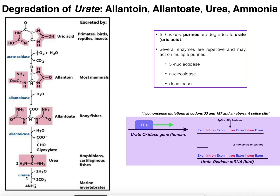Some organisms do express the enzyme urease. Urease breaks apart urea using two molecules of water — it's a hydrolytic enzyme — producing four molecules of ammonia (from the two urea molecules) and two molecules of carbon dioxide. This ammonia is excreted as the final purine degradation product by marine invertebrates, such as corals, which degrade purines all the way to ammonia because they possess all four of these enzymes.